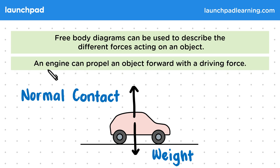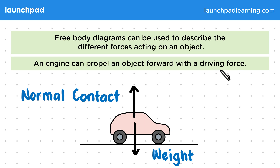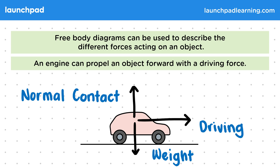An engine can propel an object forward with a driving force. The driving force does work to convert chemical energy to kinetic energy in the engine of the car. So on the free body diagram, the driving force is directed forwards.